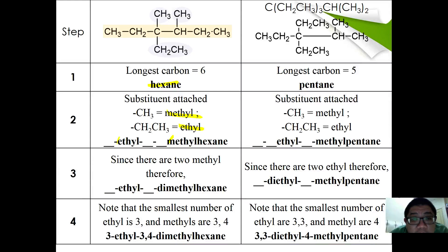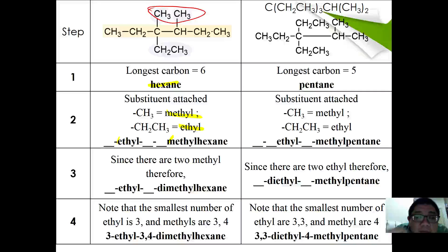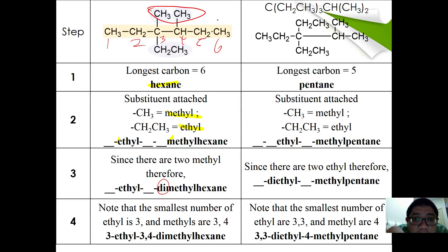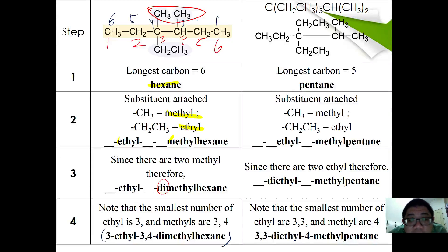Step three: since there are two methyl groups, we place the prefix 'di' in front of methyl. For numbering, reading left to right gives 3-ethyl-3,4-dimethyl; reading right to left gives 4-ethyl-3,4-dimethyl. We prefer the lower set of numbers, so the correct name is 3-ethyl-3,4-dimethylhexane.